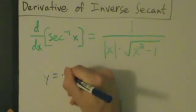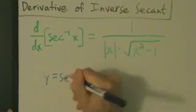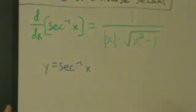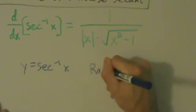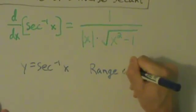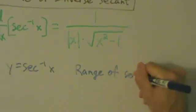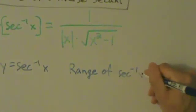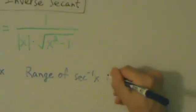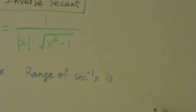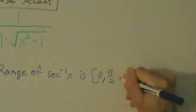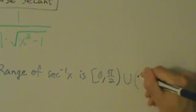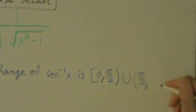Let's start by saying y equals the inverse secant of x. Before we move on, we want to remember what the range of the inverse secant function is. In interval notation, it's 0 to pi over 2, union pi over 2 to pi.